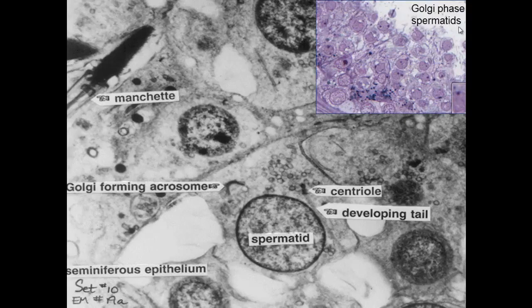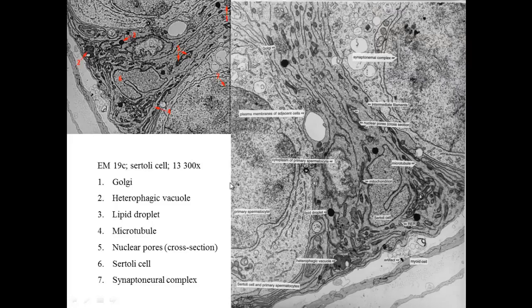With a little acrosomic vesicle forming up there, so these are Golgi phase because of the Golgi phase spermatids.